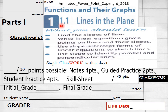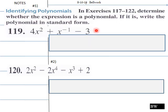1.1 Lines in the Plane. We're going to cover these topics here, part one. There's 40 points of lecture in this 1.1 part one and there's 10 points here of note-taking, so have your note-taking guides out. Finding slopes of lines, writing linear equations, giving points on lines and their slopes, using slope intercept forms of linear equations to sketch lines, and then using slope to identify parallel and perpendicular lines. So again, 10 points here. Contact me if you don't have note-taking guides.